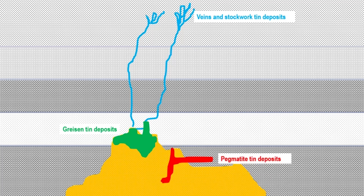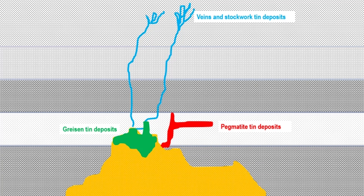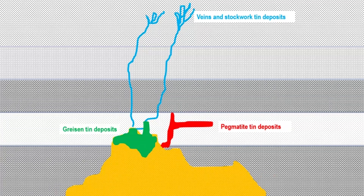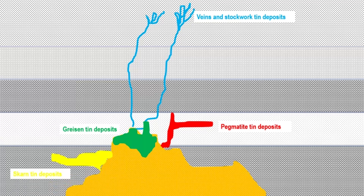Tin pegmatites, shown here in red, form earlier in the cooling process than veins and stockworks and greisens, when the tin-rich liquid rock or magma is injected into the country rock in various shapes and orientations.